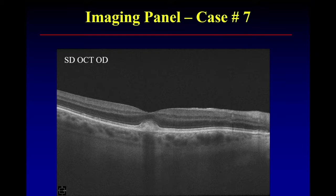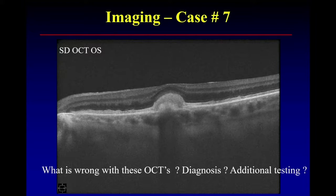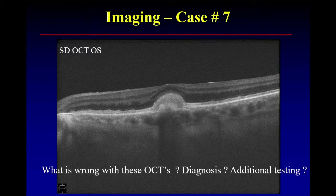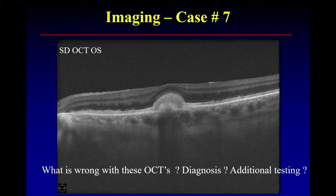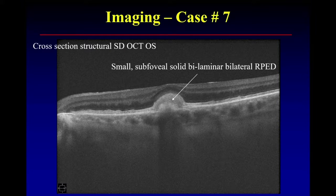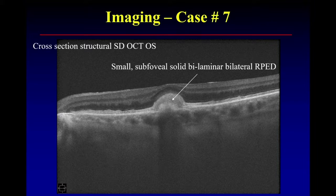On to case seven. Mike, I'm going to show you a right eye and a very similar-looking left eye and ask: what's wrong? Well, under the fovea there are these sort of vitelliform or elevated lesions. Are these pathognomonic of a disorder, and do you need additional testing? Nothing pathognomonic is coming up yet. We've got these bilaminar, bilateral, solid-appearing RPEDs — does that bilaminar nature strike anybody as characteristic of pattern dystrophy, adult-onset vitelliform?